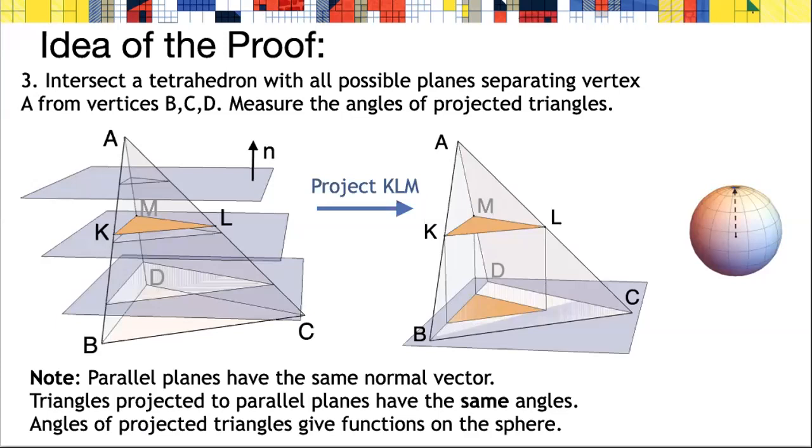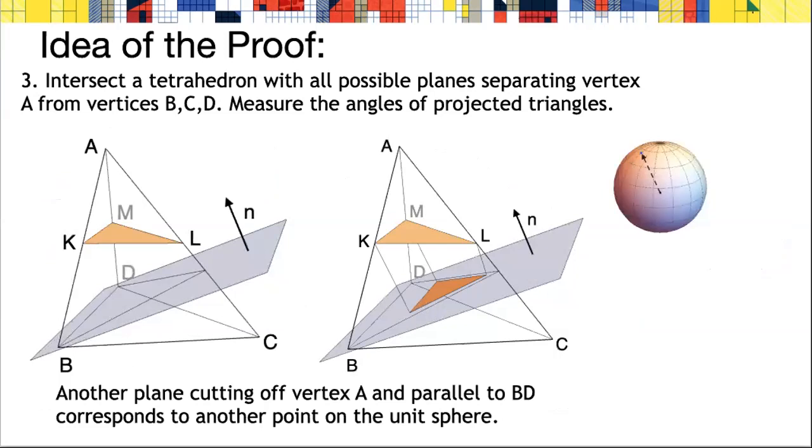What we notice first is that when you intersect the tetrahedra with parallel planes and project any of those planes, you'll get the same angle in the projection. So the projection angles are actually determined by the normal of the plane that you're projecting to, which is a point on the sphere. If we think of this triangle KML that we're projecting and fix one of the angles, the size of the angle that it projects to is given by a function on the two sphere.